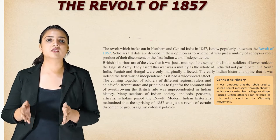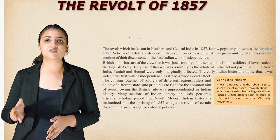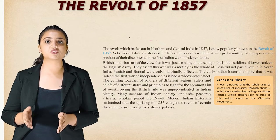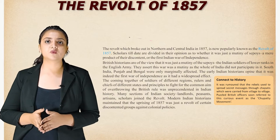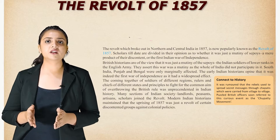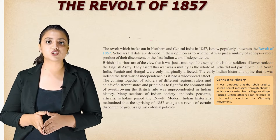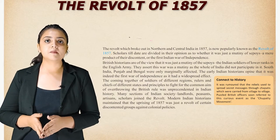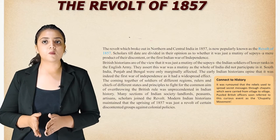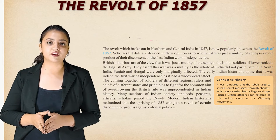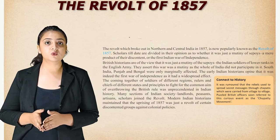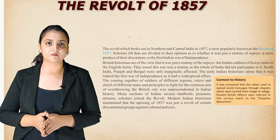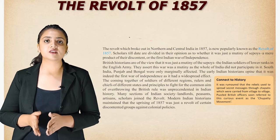The revolt which broke out in northern and central India in 1857 is popularly known as the Revolt of 1857. Scholars are divided on whether it was just a mutiny of sepoys or the first Indian war of independence. British historians assert it was a mutiny since the whole of India did not participate — South India, Punjab and Bengal were only marginally affected. Early Indian historians opine it was the first war of independence, as soldiers of different regions, rulers and chiefs of different states came together to overthrow British rule. Many sections of Indian society — landlords, peasants, artisans and scholars — joined the revolt.